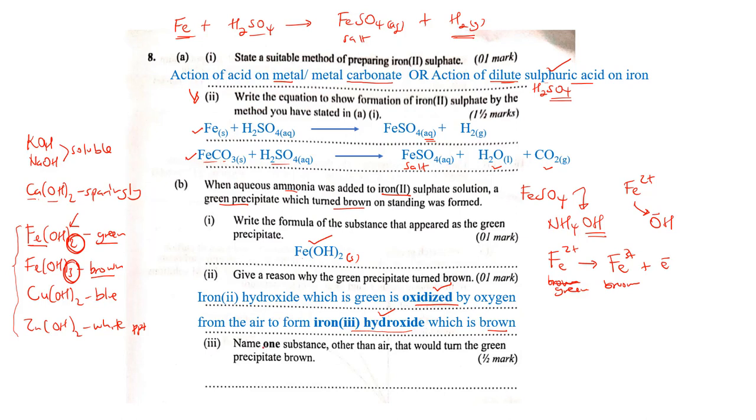Part iii: Name one substance other than air that would turn the green precipitate brown. The key word here is oxidized. We have to look for a substance that can oxidize iron(II) to iron(III). We look at oxidizing agents including concentrated nitric acid, chlorine or chlorine water, bromine water, hydrogen peroxide, sodium peroxide solution and so on.